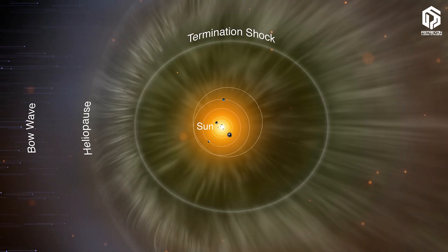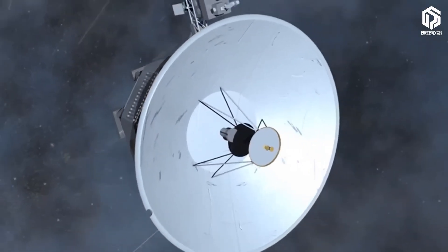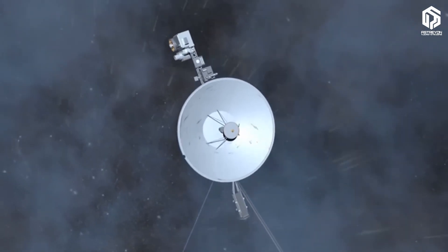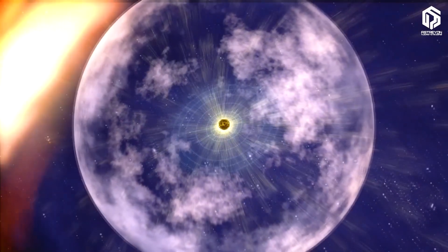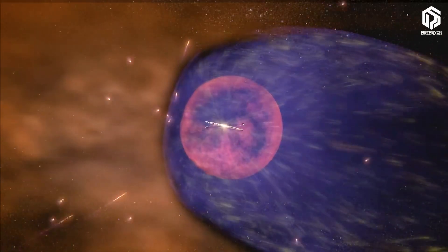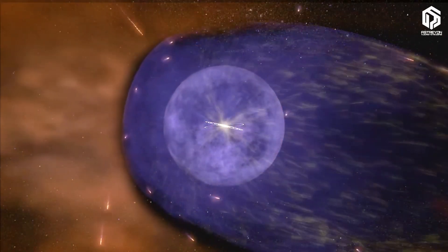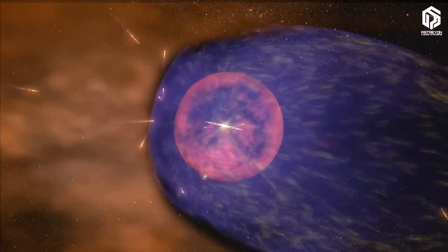But the real complexity lies in the heliopause itself, a boundary that scientists thought would be simple and clear, but Voyager showed how dynamic and unexpected it is. The magnetic field at this boundary only changed direction by two degrees, not the 90 degrees that models predicted. This means particles can move between inside and outside the heliosphere, like magnetic highways connecting two worlds. This discovery challenged old models and showed that the heliopause is not a wall, but a thick region with constant fluctuations, where cosmic and solar winds interact in a complex dance.